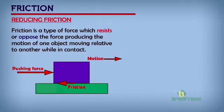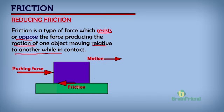Let's look at friction, a product of motion. Friction is a type of force which resists or opposes the force that is producing it. That force is required to produce motion and friction resists or opposes that motion of the object, relative to another while they are in contact.